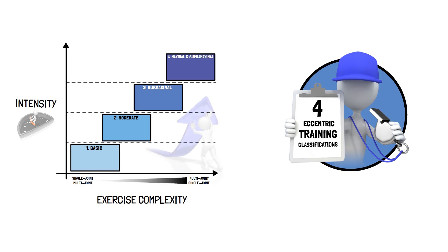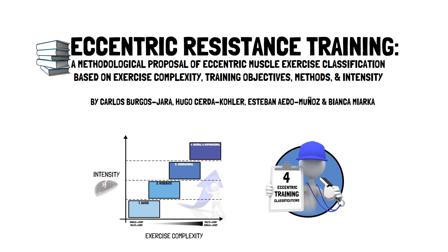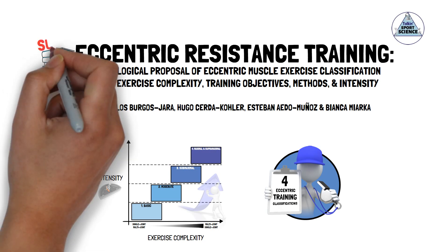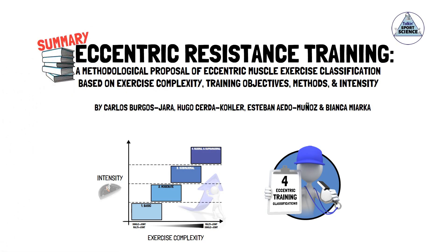Understanding the proposed characteristics involved at each level can help guide eccentric exercise prescription. This presentation, brought to you by Talking Sports Science, will be a summary of the characteristics involved at each of the four levels.